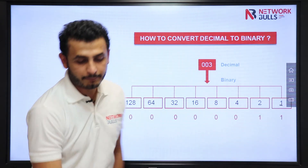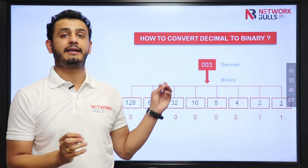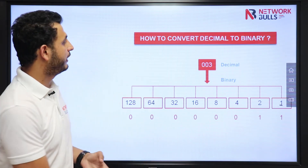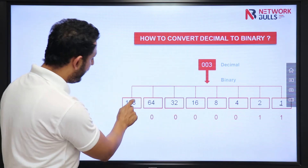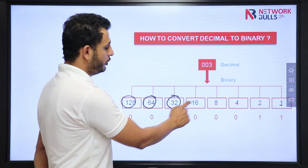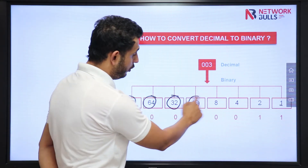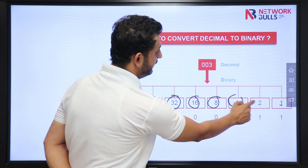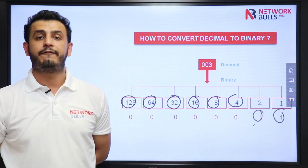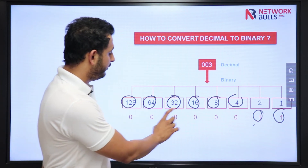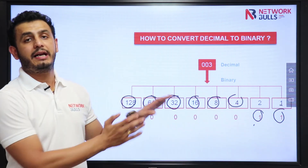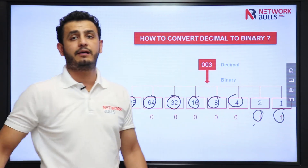Likewise, let's say I have decimal number 3 and I want to convert it. Do I need 128? No. 64? No. 32? No. 16? No. 8? No. 4? No. I just need 2 and 1, so these bits will be on. All other bits will be off — so I can simply write 00000011. That is the binary representation for decimal number 3.